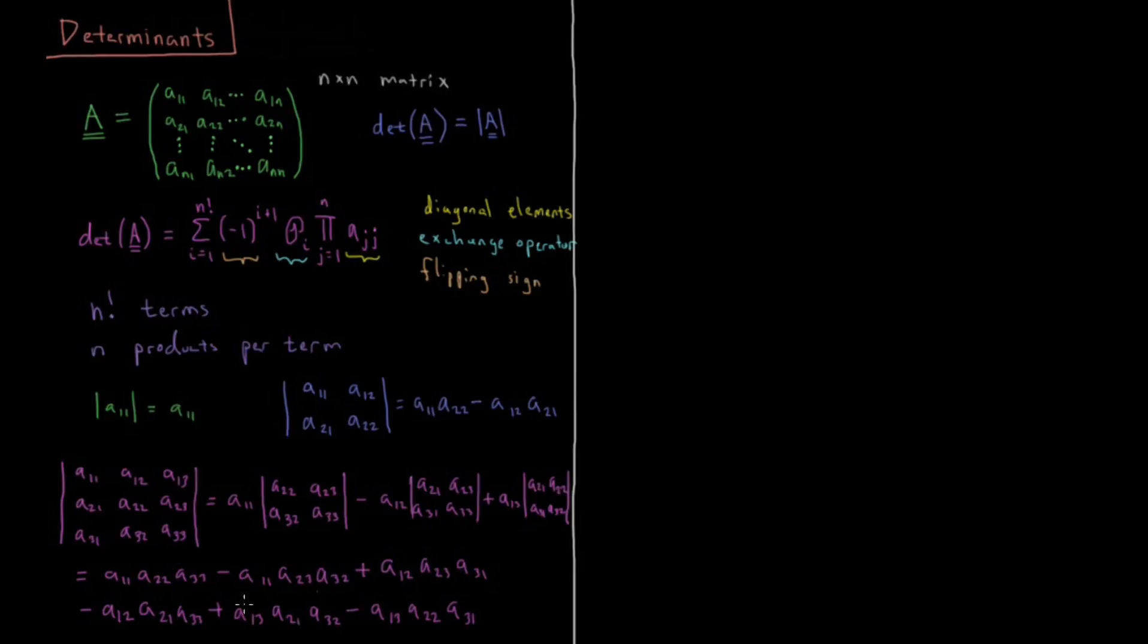So for a three by three, this is what all these terms end up being when you apply the proper minus and plus symbols for all those possible permutations.